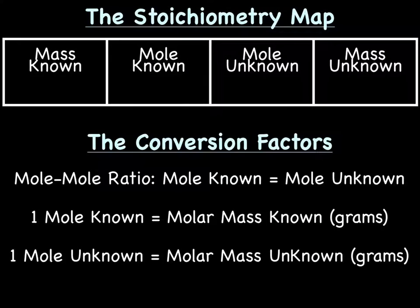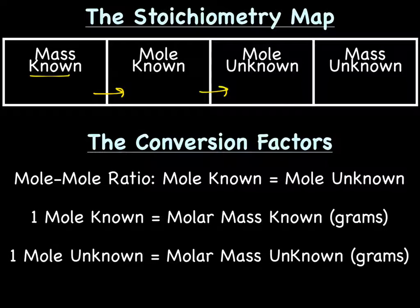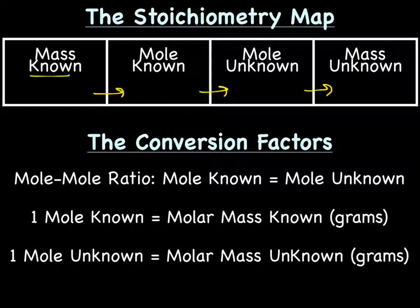Let's review the use of the stoichiometry map. Our map starts at mass known, then goes to mole known, from mole known to mole unknown, and from mole unknown to mass unknown. I really do suggest you use this map for each and every problem when doing stoichiometry. It is actually a very useful tool to keep you from getting lost.